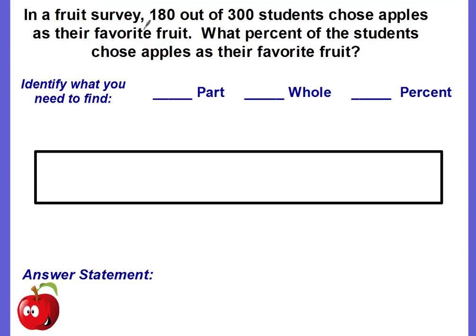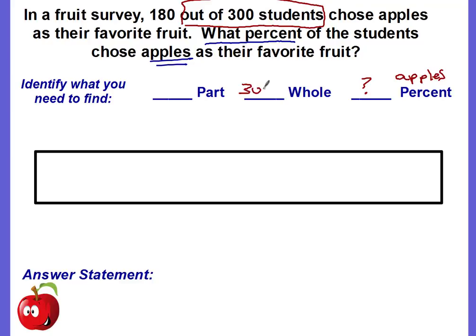Next example: in a fruit survey, 180 out of 300 students chose apples as their favorite fruit. What percent of the students chose apples? The percent is what we're looking for, and it represents those that chose apples. The whole is 300 students and the part is 180 — those who chose apples. Do the part and the percent describe the same thing? Yes, they both describe apples.